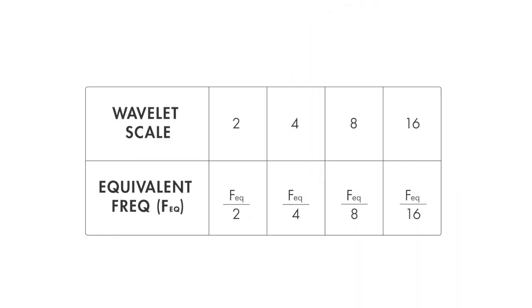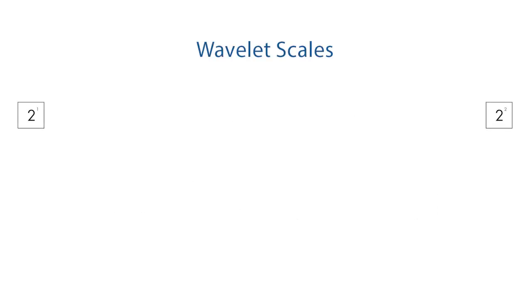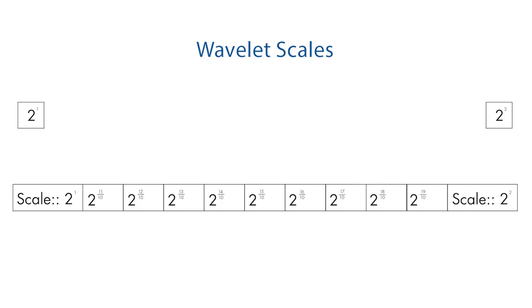Recall from our previous video that when you scale a wavelet by a factor of 2, it results in reducing the equivalent frequency by an octave. With the CWT, you have the added flexibility to analyze the signal at intermediary scales within each octave. This allows for fine scale analysis.